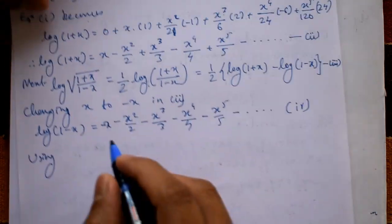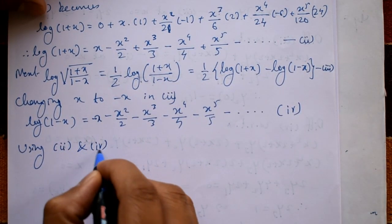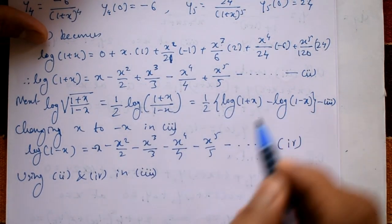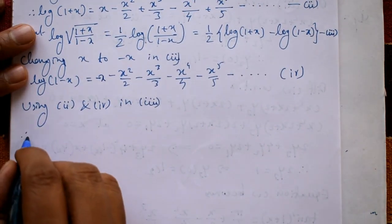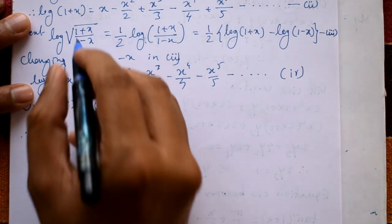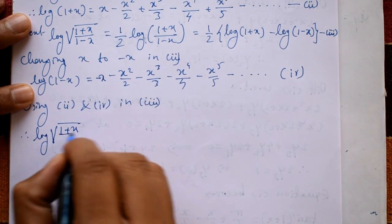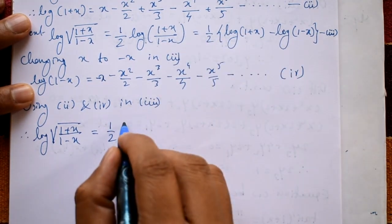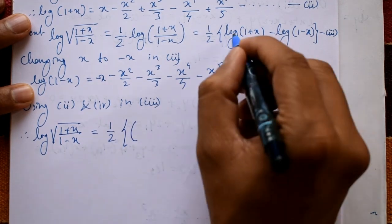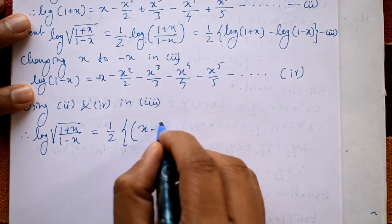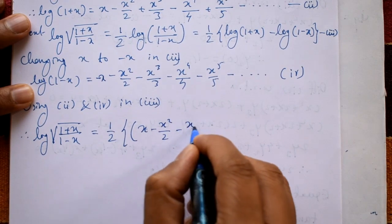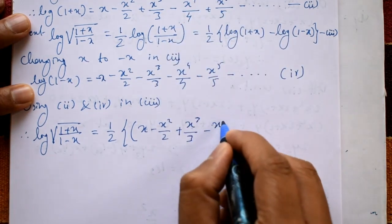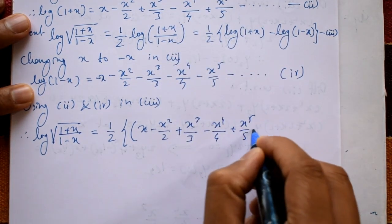Using equations 2 and 4 in equation 3: log√((1+x)/(1-x)) = ½ · [log(1+x) − log(1-x)] = ½ · [(x − x²/2 + x³/3 − x⁴/4 + x⁵/5 − ...) minus (−x − x²/2 − x³/3 − x⁴/4 − x⁵/5 − ...)].